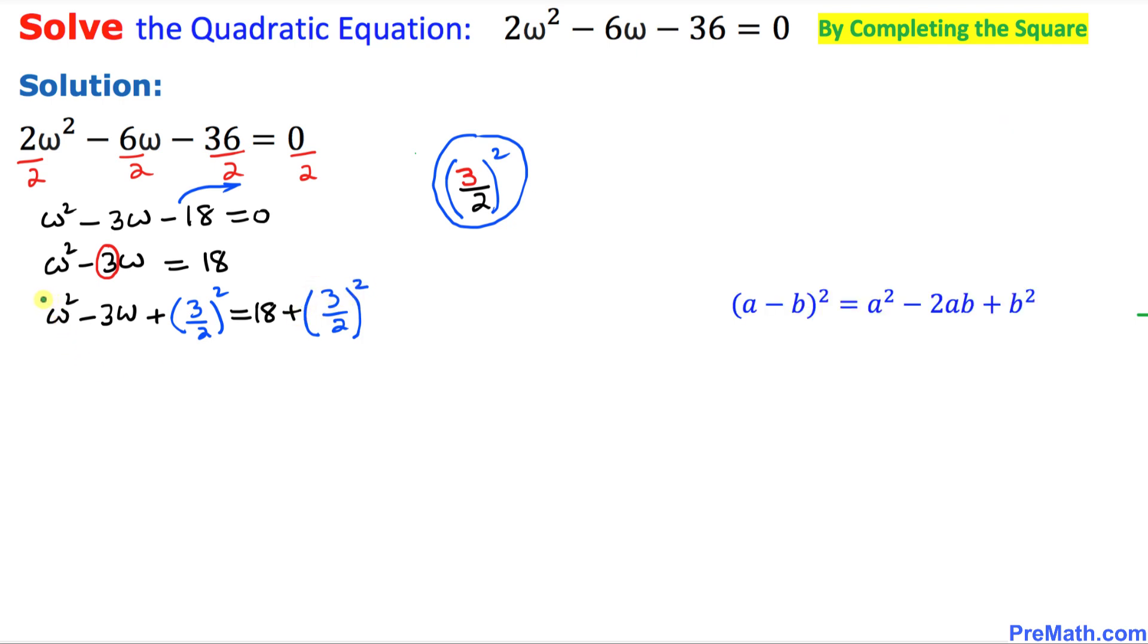Now let's focus on the left hand side. We can write this as a complete square of (ω - 3/2)².